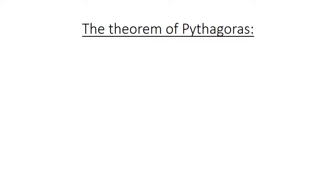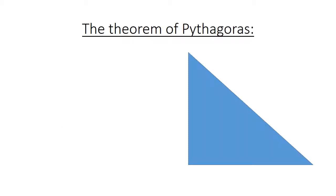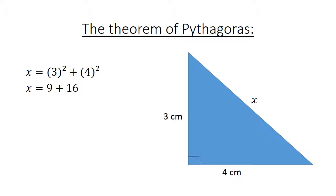The theorem of Pythagoras. We have a right angle triangle with sides of 4 centimeters and 3 centimeters, and we have X. X equals 3 squared plus 4 squared. X equals 9 plus 16.